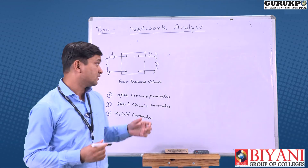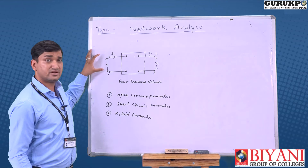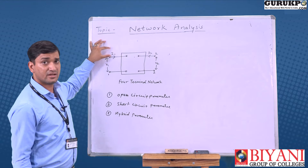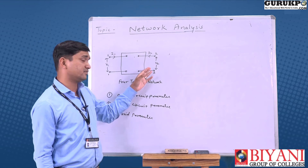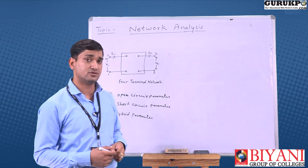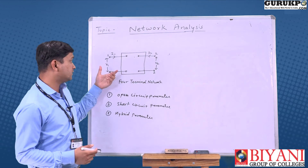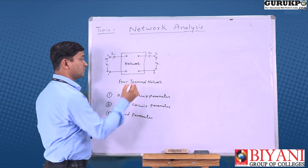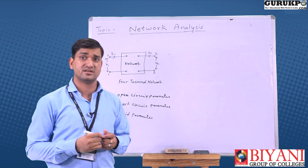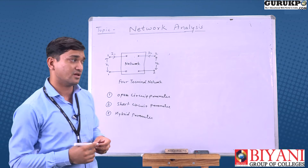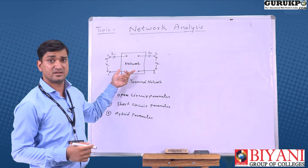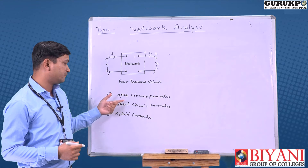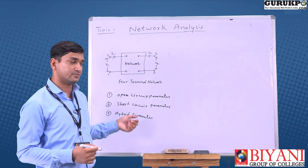In the four terminal network, the input voltage is V1 and the current is I1, and the output terminal voltage is V2 and the current is I2. The network contains various linear combinations of impedance elements such as resistance, capacitance, and inductors. There are different parameters: open circuit parameter, short circuit parameter, and hybrid parameter.